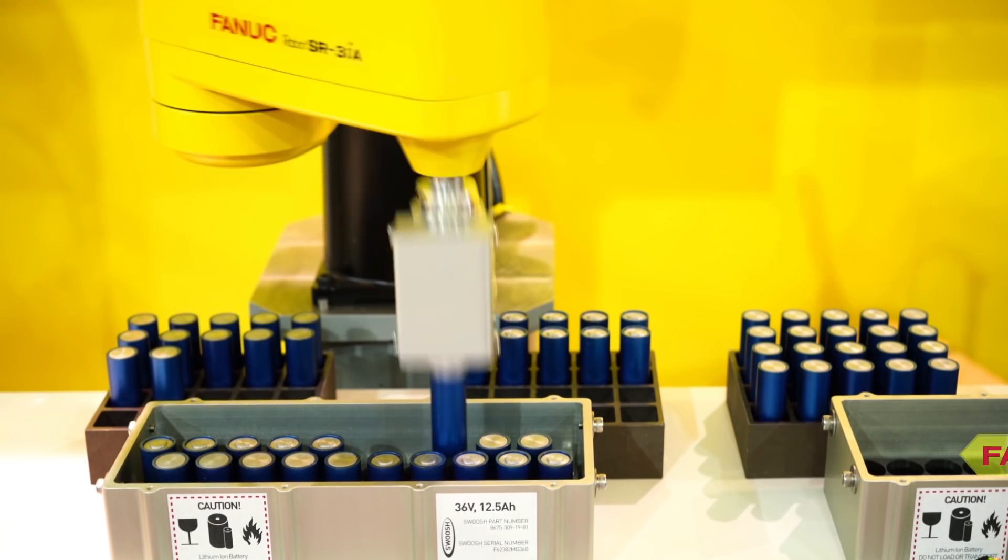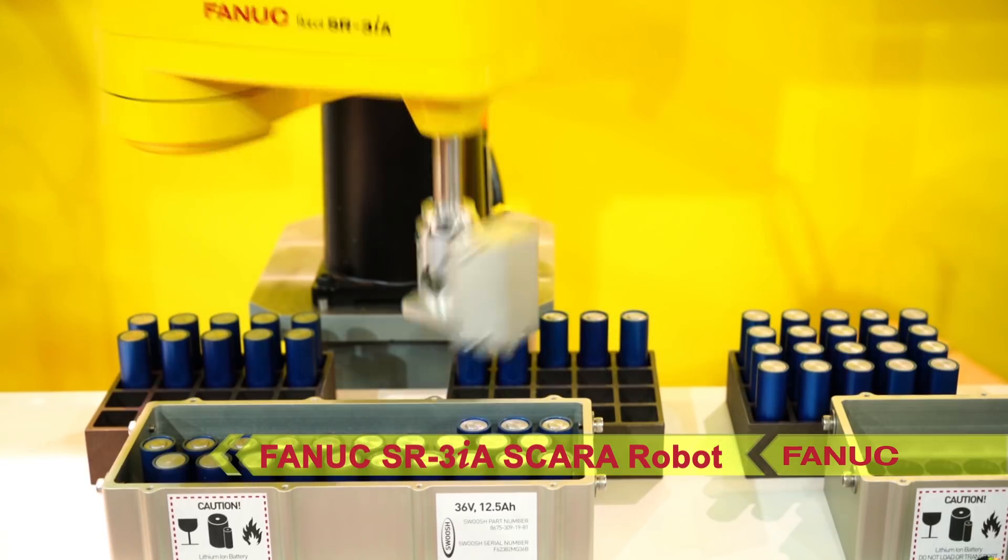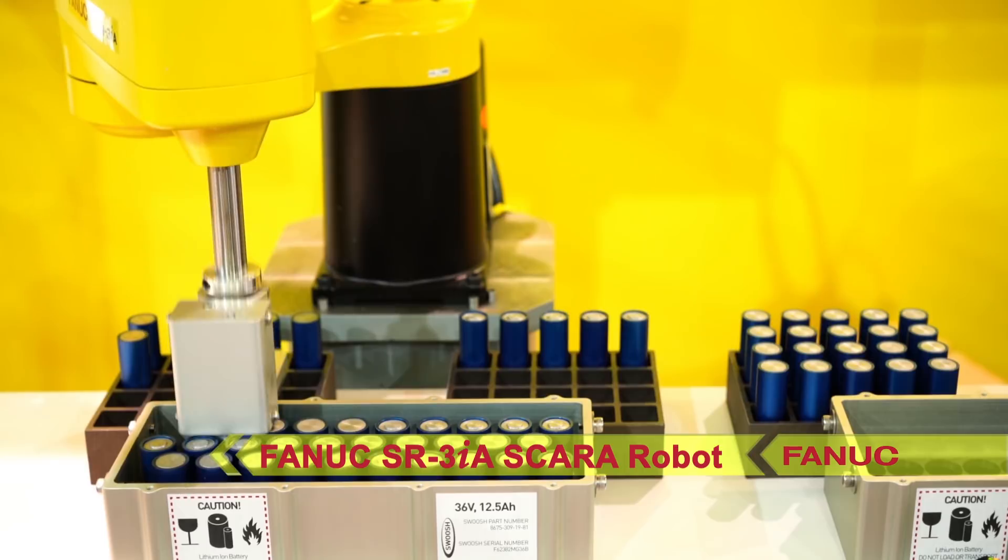The SCARA robot seen here is FANUC's SR-3iA model, which includes a three kilogram payload, 400 millimeter reach, and 200 millimeter stroke.